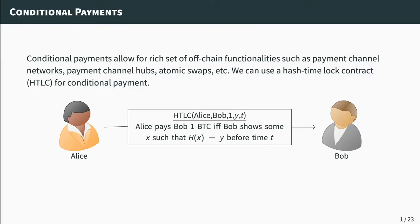Before starting with adapter signatures, let's look into conditional payments. Conditional payments form the backbone of a rich set of off-chain functionalities such as payment channel networks, payment channel hubs, and many others. We can construct conditional payments using hash time lock contracts, which make use of a cryptographic hash function. We can consider two parties, namely Alice and Bob, such that Alice wants to pay Bob conditioned on some cryptographic puzzle.